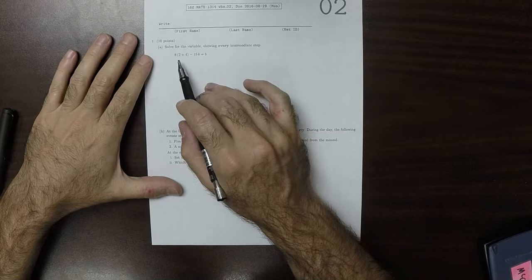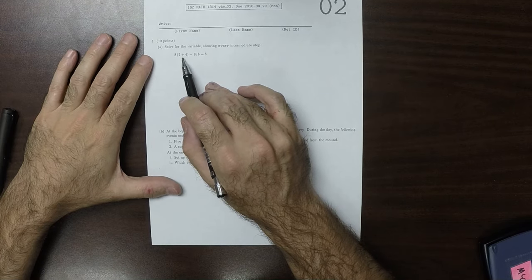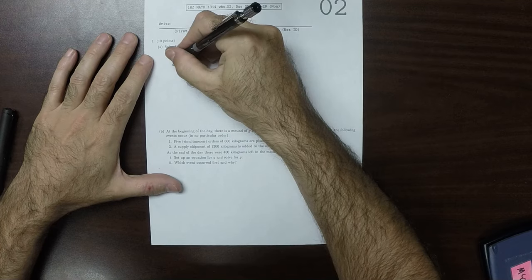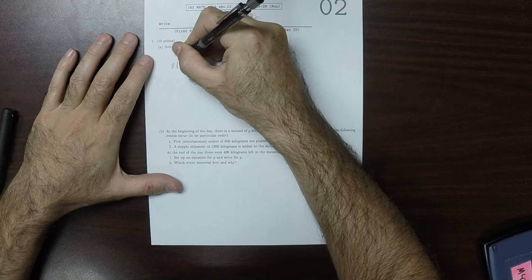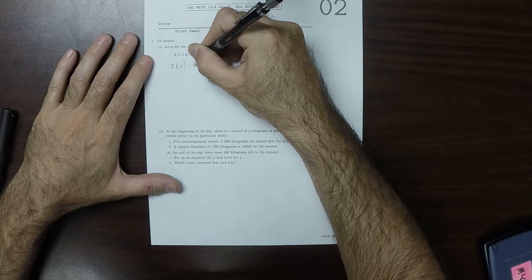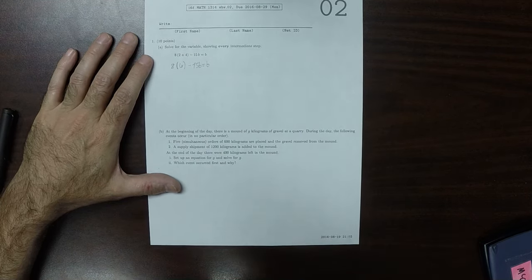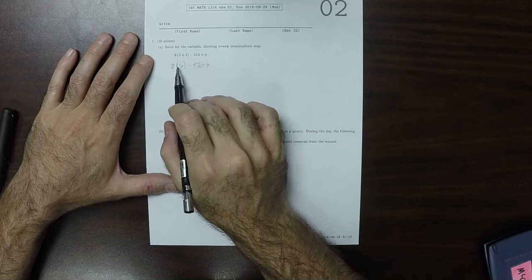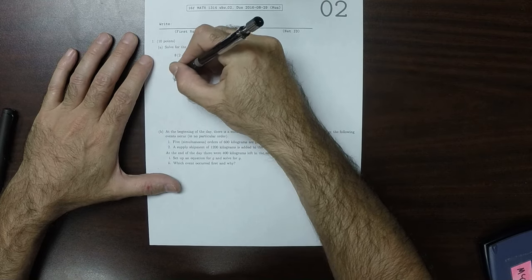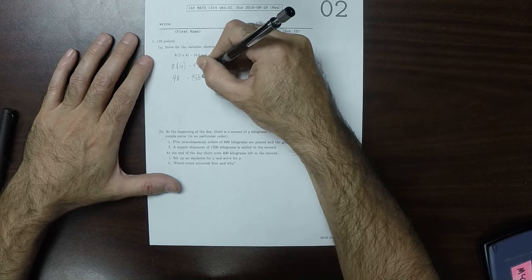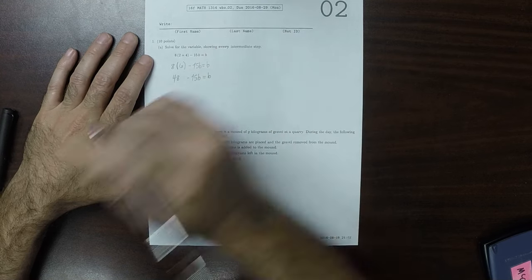The order of operations says that things inside of parentheses occur first. So this would be 8 multiplied by 6 minus 15B equals B. This is a multiplication, so it occurs first. So 6 times 8 is 48 minus 15B equals B.